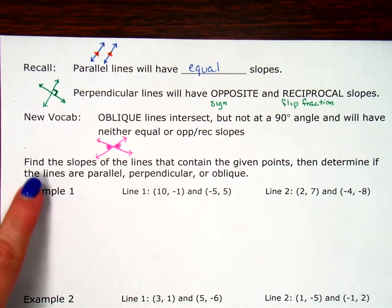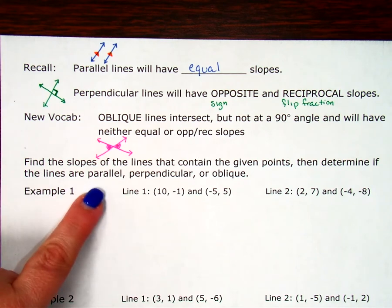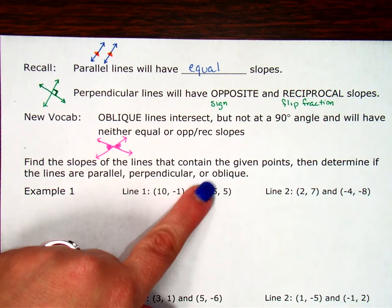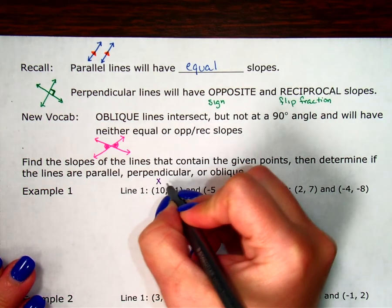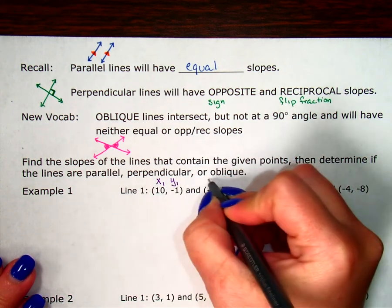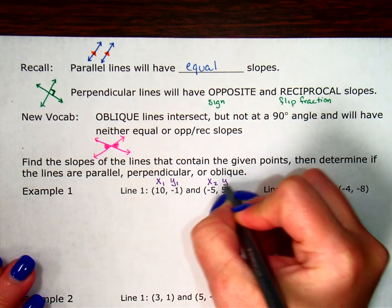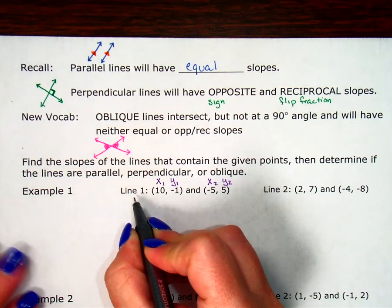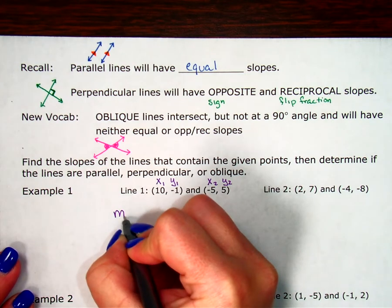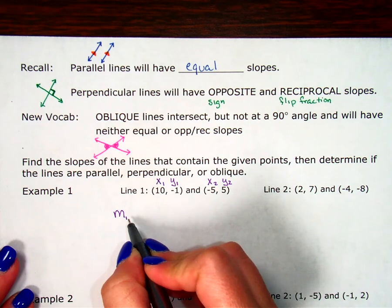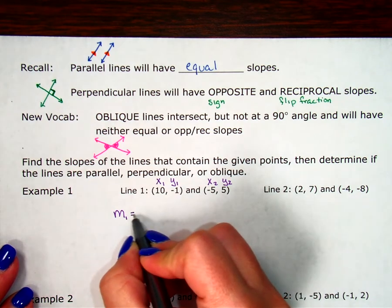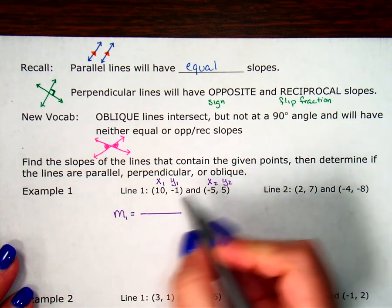So our activity for today is we're going to find the slope of the lines that contain the given points. Then we're going to determine are those lines parallel, perpendicular, or oblique. So first thing I'm going to do is label my points x1, y1, and x2, y2. So then my slope of line 1, sometimes I'll put a little m and then a little 1 next to it for slope of line 1.